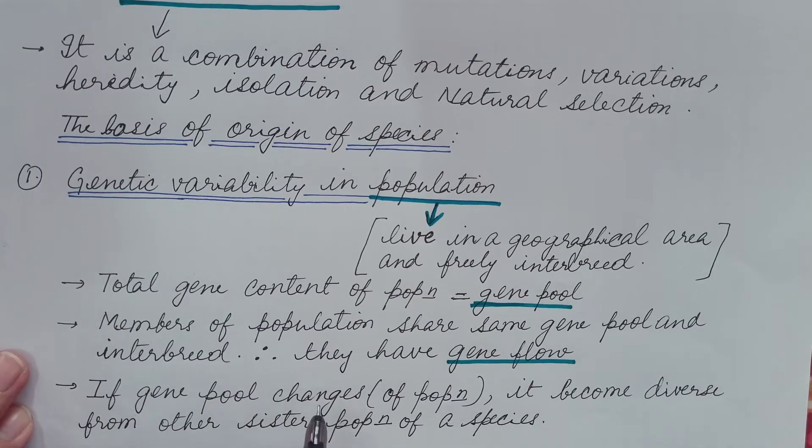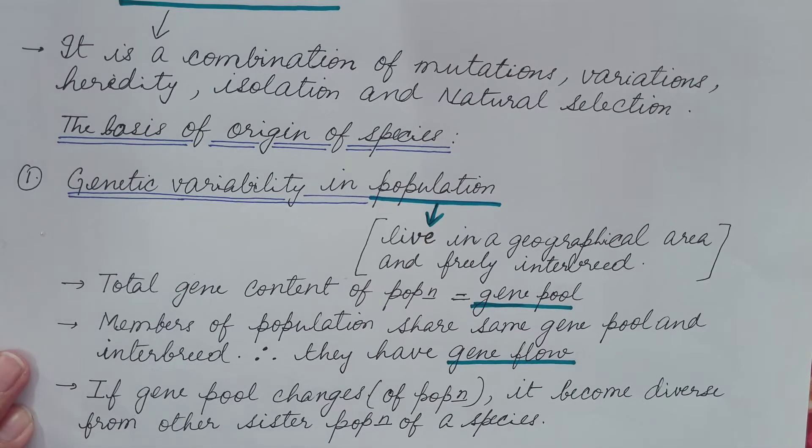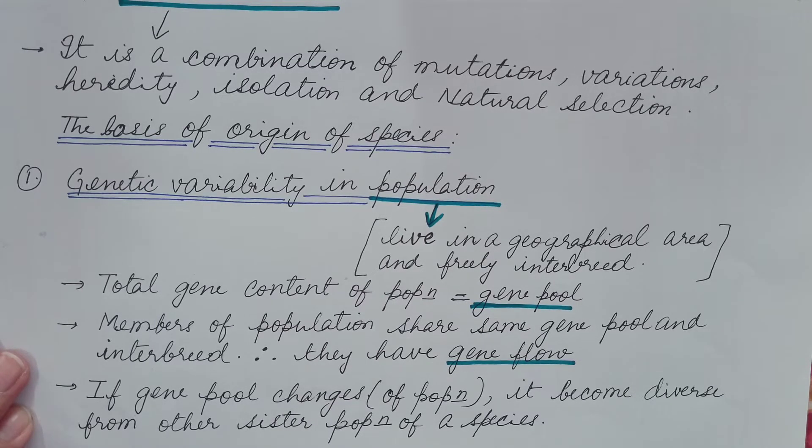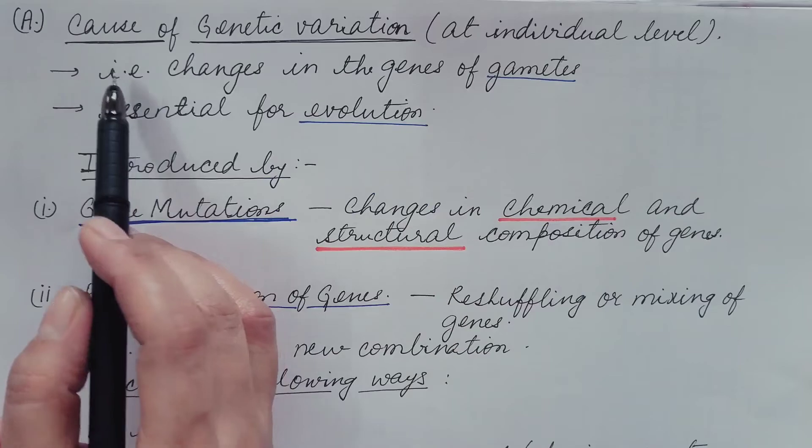So they have gene flow or there is exchange of genes between each other. If due to some causes or reasons, gene pool of population changes, then it becomes diverse or different from other sister population of species. This leads to generation of new species or modification of older ones.